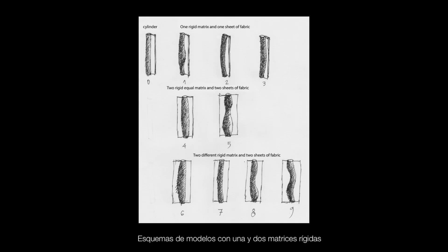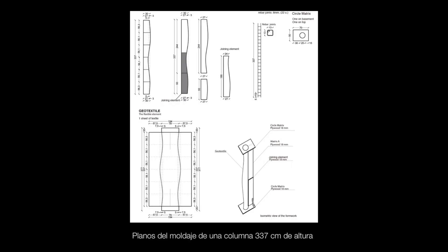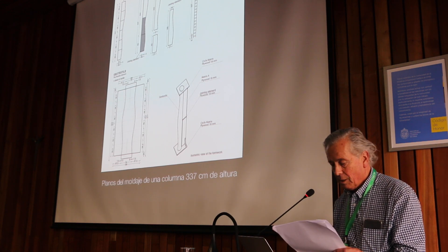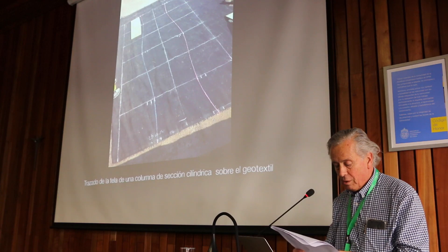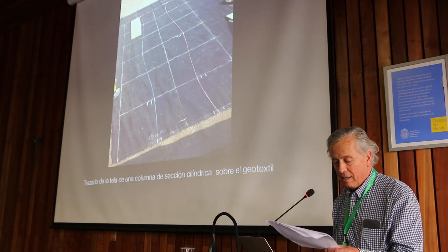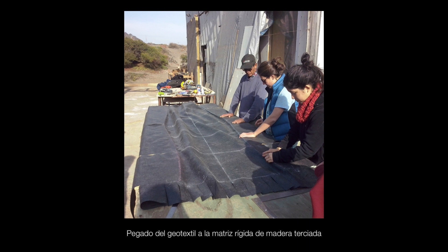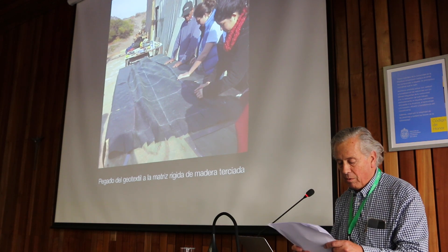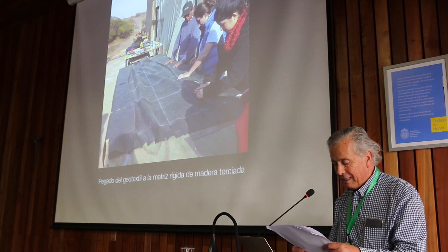Así, durante un par de años, ensayamos con modelos en un modo de trabajo que incluye el hallazgo, proponiendo formas de columnas en lo que podría ser un nuevo lenguaje para la arquitectura. Como arquitectos, nos anima la posibilidad de una nueva forma para el hormigón que podríamos llamarla orgánica, ya que conserva en el hormigón ya curado, una vez rígido, una memoria de su estado húmedo y deformable.